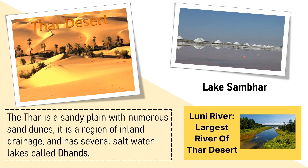In this picture of Lake Sambhar, you can see the mounds of salt which have been extracted from the water, collected, refined, and later packed and sent to our shops. The Luni River is the largest river of the Thar Desert and it drains into a marsh known as the Rann of Kutch, which is found in Gujarat. Parts of the Thar Desert have become fertile because of the Indira Gandhi Nahar, or the Indira Gandhi Canal, which brings water from the river Sutlej.